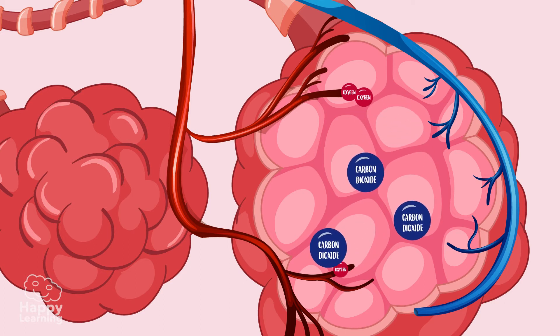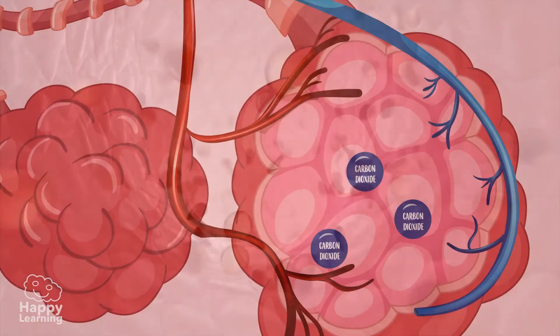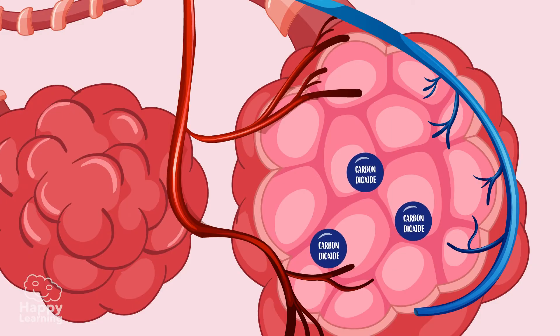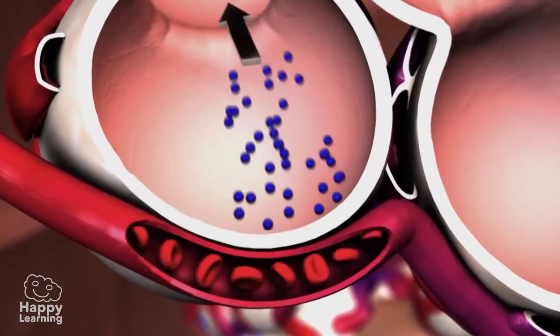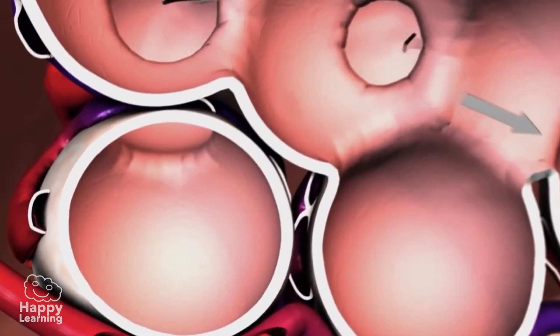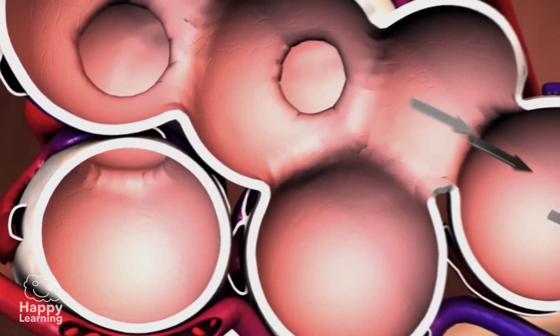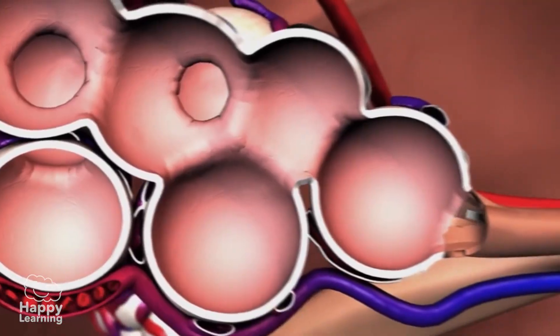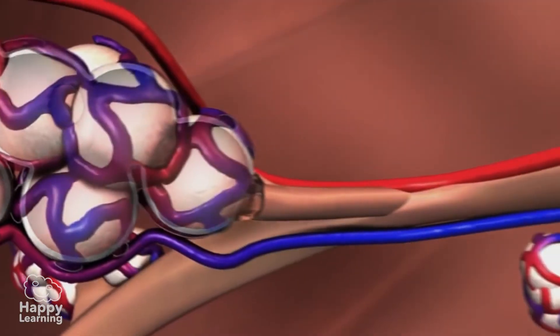The oxygen in the air passes into the blood through some very small blood vessels. Then what is left over from the air, which is carbon dioxide, travels back through the respiratory system to be expelled outside.